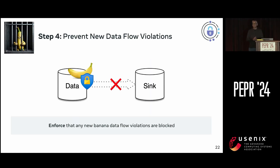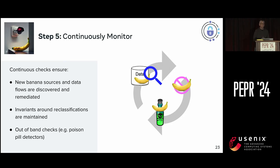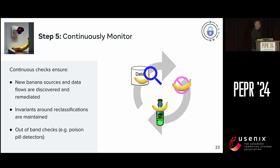Once you've gone through this process, you want to ensure you don't have to keep repeating it. We have various mechanisms — signals produced at diff time as well as runtime protections — that ensure these safeguards hold true and you don't regress. And finally, we have continuous monitoring to ensure new potential sources of bananas are found, reclassifications are holding, there's no banana sneaking past the smoothie-making process, and out-of-band checks ensure your safeguards keep working. I'll hand it back to Diana for more detail.